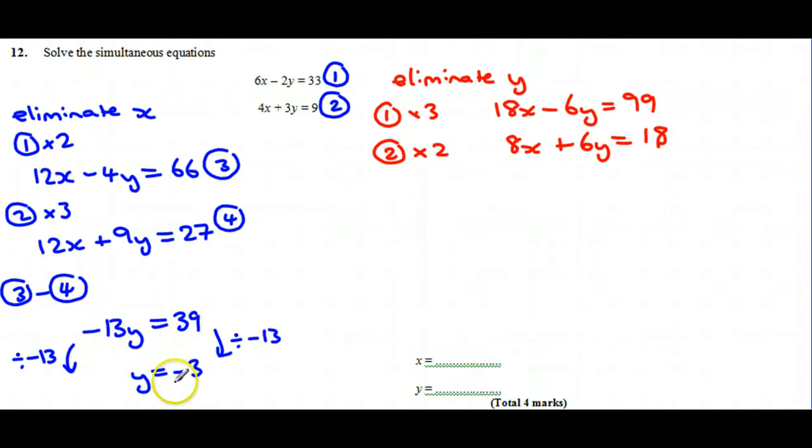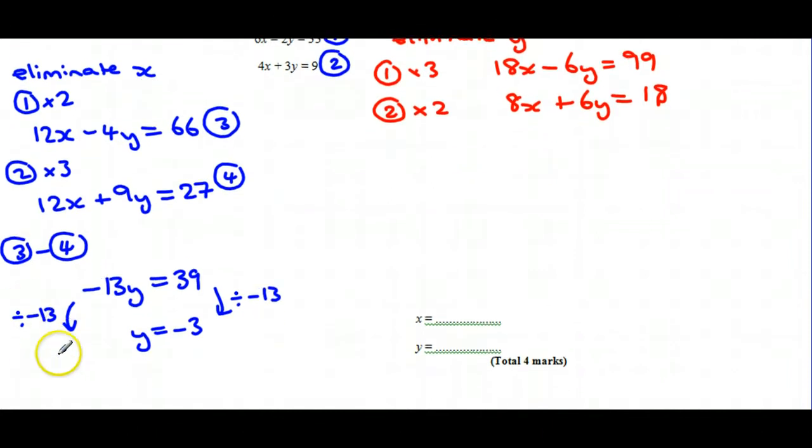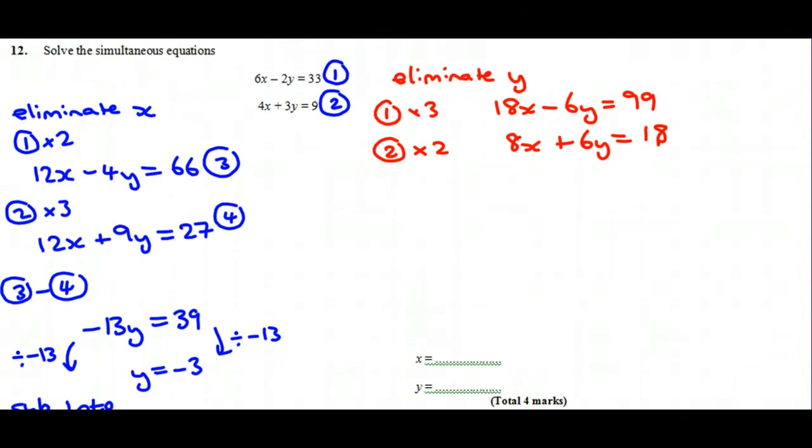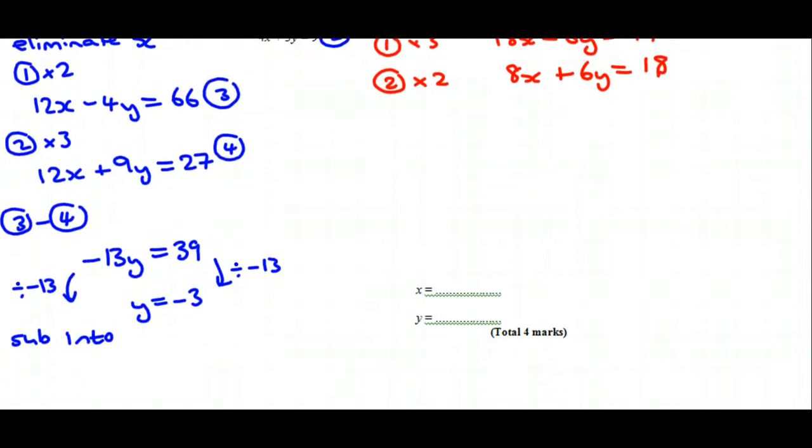You'll notice that that goes in three times, but it needs to be minus 3. So minus 13 times minus 3 would give us 39. So we've got y equals minus 3. And what we can do with that is we can put that back into one of the equations, and the easiest one to pick would be equation number 2.